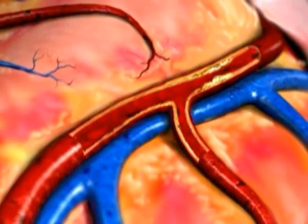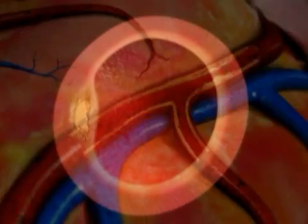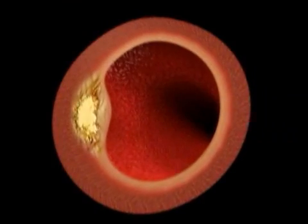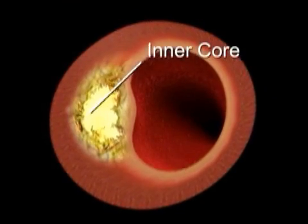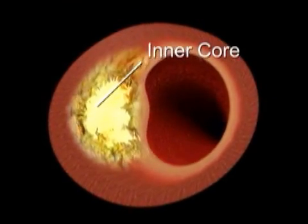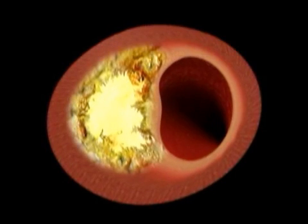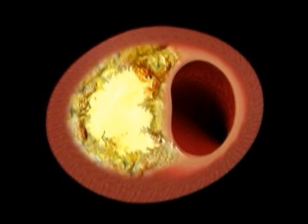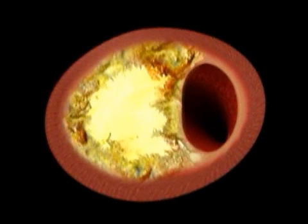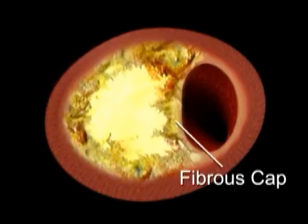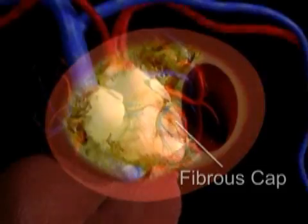Eventually, the plaque matures into a structure consisting of two main parts: a soft inner core that consists of cholesterol, waste products, inflammatory cells, and calcium, and a thin outer shell called the fibrous cap.